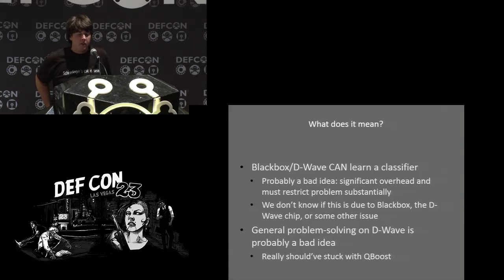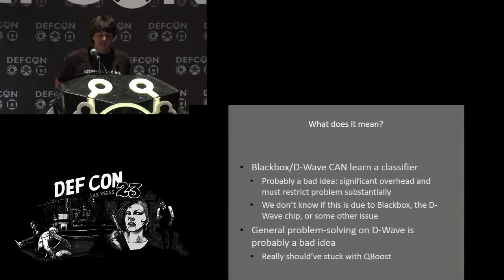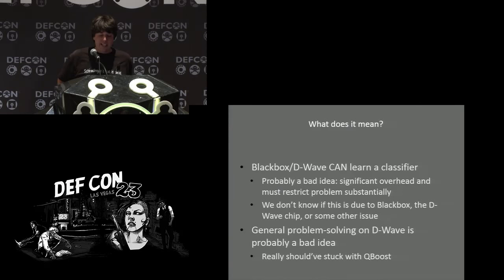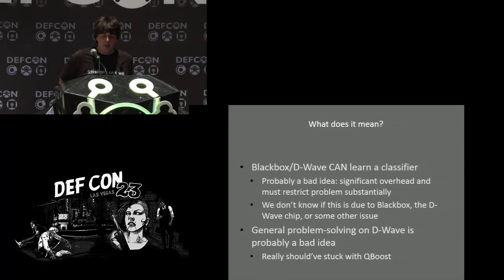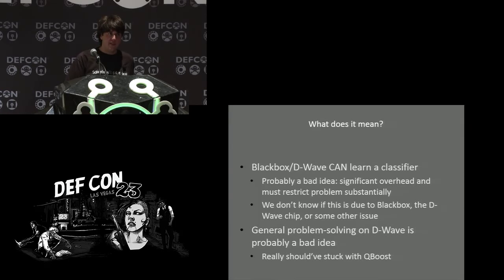So what does this all mean? We found that while it's possible to create a malware classifier using the D-Wave with similar accuracies to standard machine learning techniques, it's not very practical. There's significant overhead and we need to restrict the problem substantially. We don't know exactly where this overhead comes from — it could be from the D-Wave software embedding arbitrary minimization problems onto the chip, or from the D-Wave chip itself not finding good enough solutions. However, we're betting Black Box is the problem. Regardless, it seems that D-Wave isn't quite ready for even this sort of toy problem, much less the real-world malware problem we currently deal with.